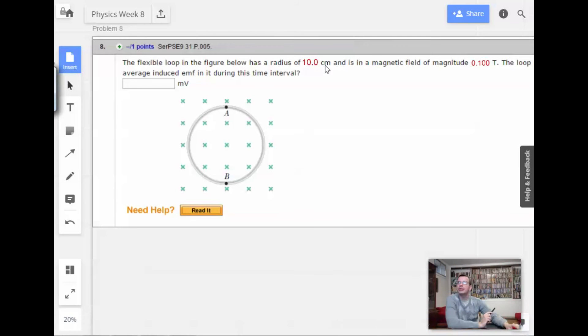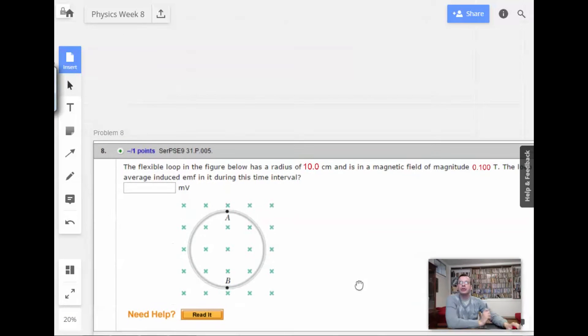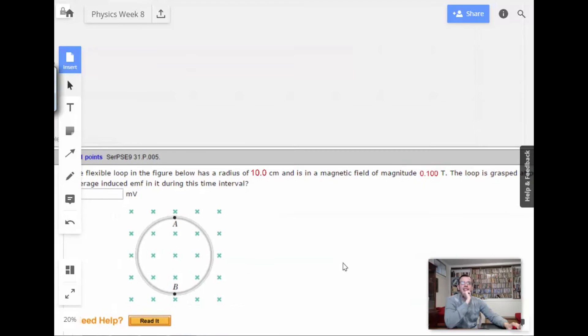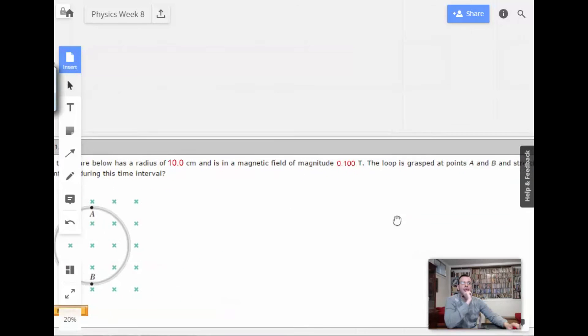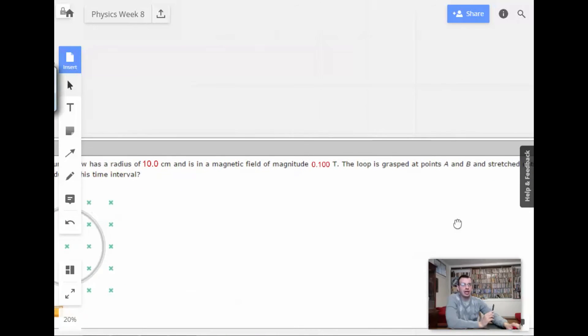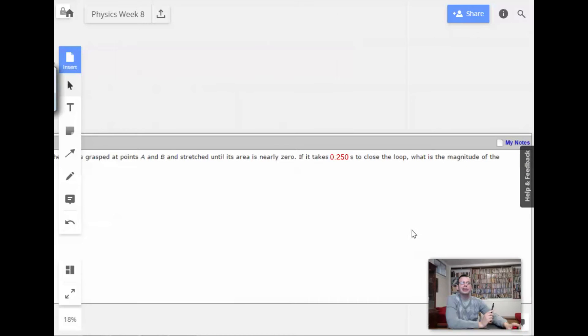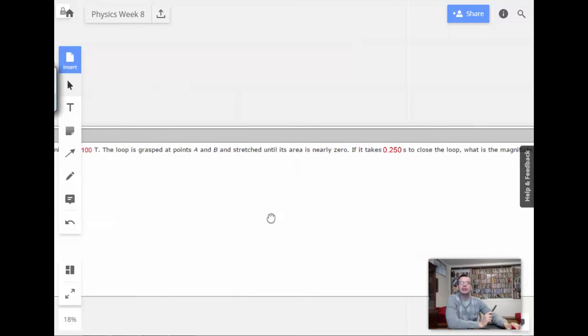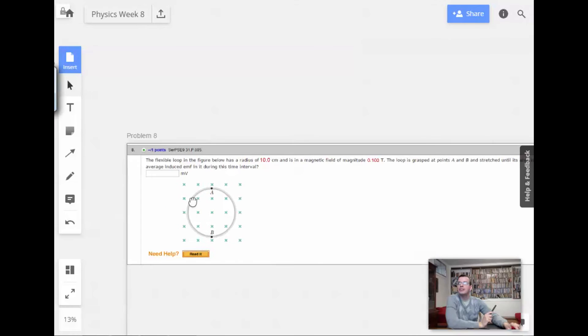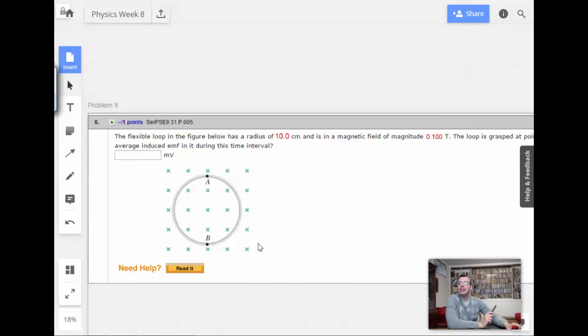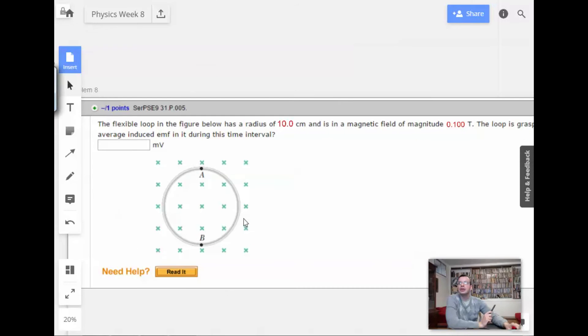Week 8, problem 8. The flexible loop in the figure below has a radius of 10 centimeters and is in a magnetic field of 0.1 teslas. The loop is grasped at A and B and stretched until it is nearly zero. It takes 0.25, I'll say a quarter second, to close the loop. What is the magnitude of the average induced EMF during this time interval?